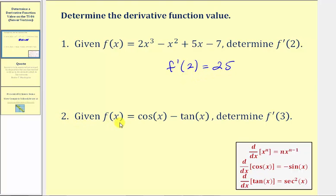Example two, we're given f of x equals cosine x minus tangent x, and we're asked to determine f prime of three. So notice here, the input is an angle, and we assume the angle is in radians, so we're going to evaluate the derivative function at x equals three radians.